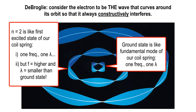The next energy level, n equals 2, is similar to the first excited state in the coil spring demonstration. It required a higher frequency from Darian to generate the right waves. If she didn't get exactly the right frequency, it was all jumbled. But once she hit just the right frequency — bang — a standing wave. With n equals 2: higher frequency, smaller lambda. And that's important.